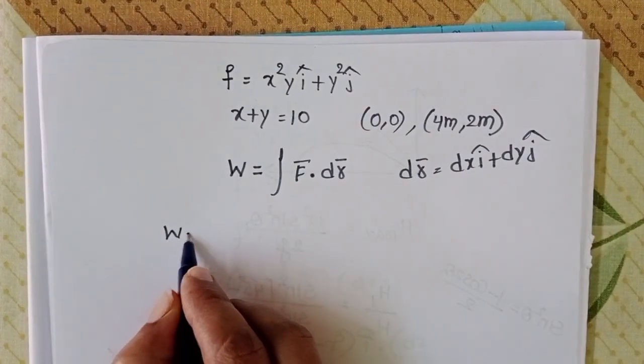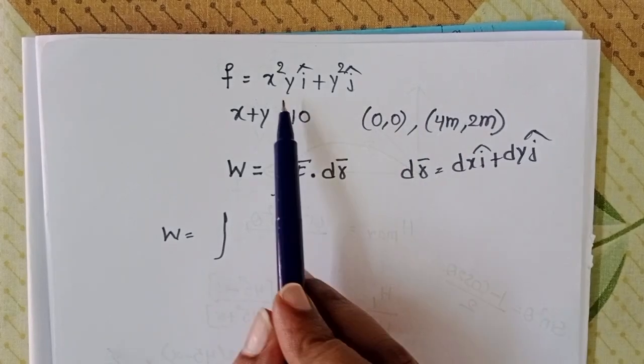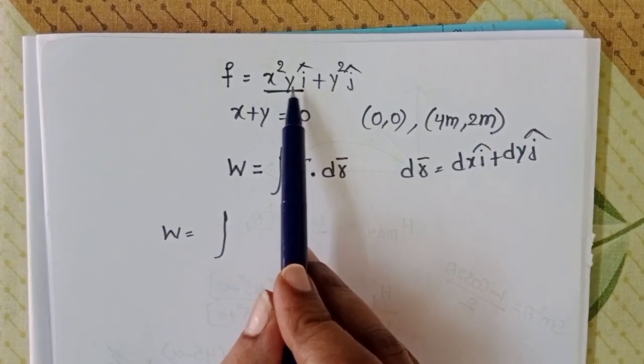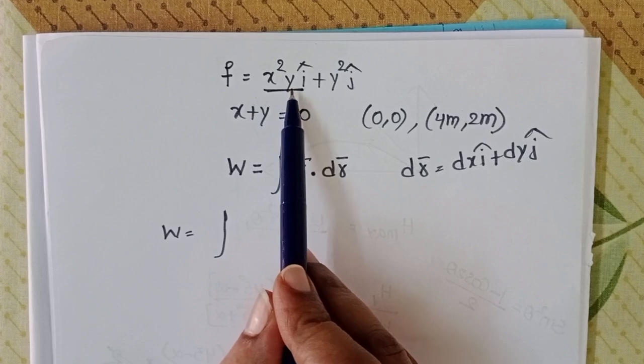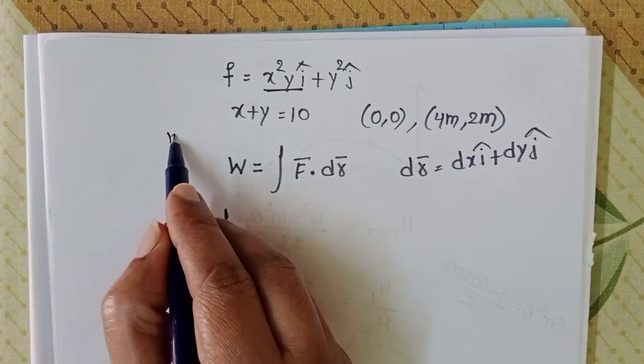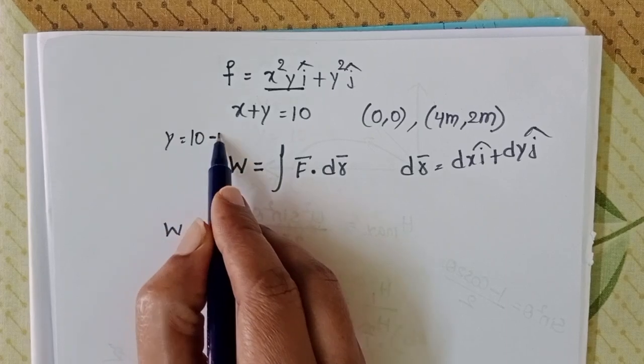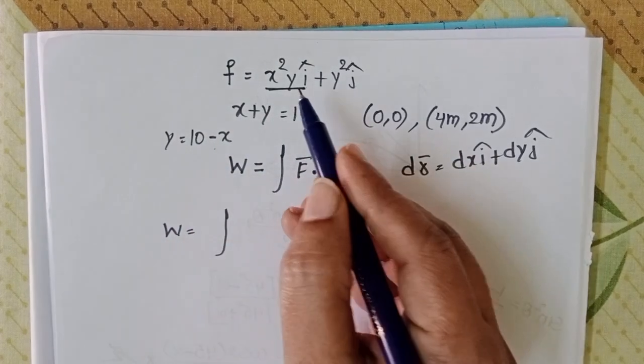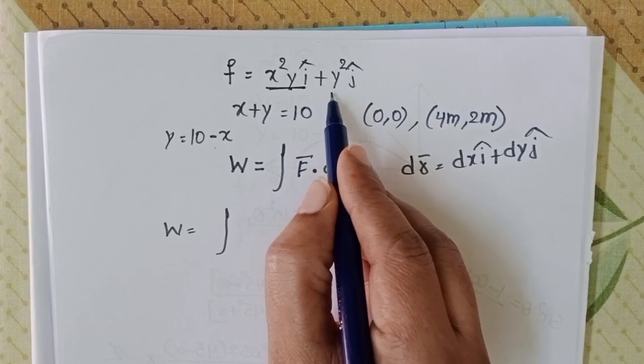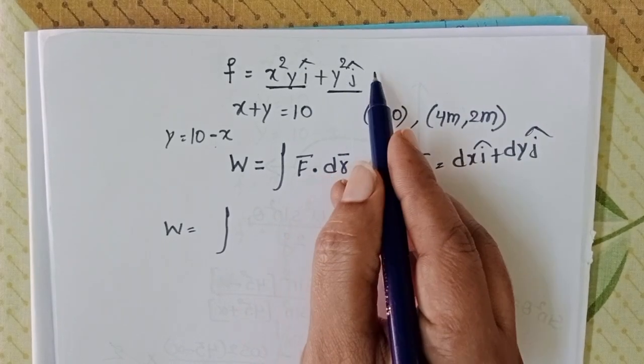Work equals integral F⃗·dr⃗. In the first term with î, there's a y term. That's why using the second equation, y equals 10 minus x, substitute this value for y, but not in the second term because that term has ĵ.